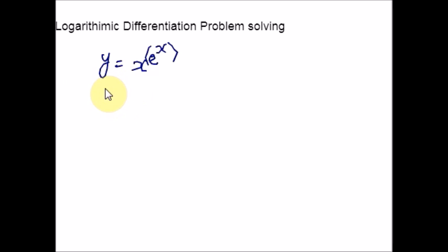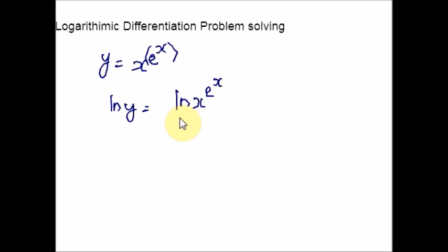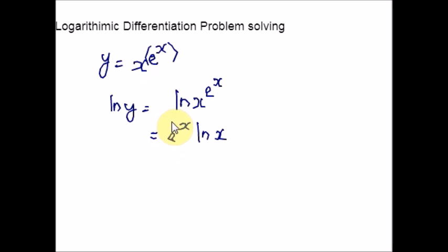So let us begin. We have y equal to x raised to e raised to x. We are going to apply the natural logarithm to both sides of the equation. Once you take the natural logarithm, any expression in the exponent's place will be shifted to the coefficient's place — that is the nature of this rule. Whenever you want to bring something from the exponent's place to the base place, you can apply this law.